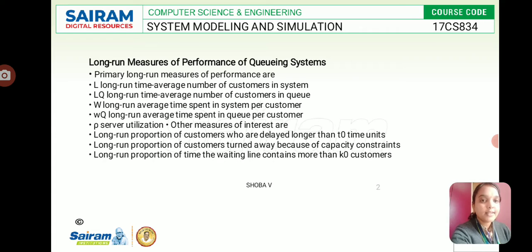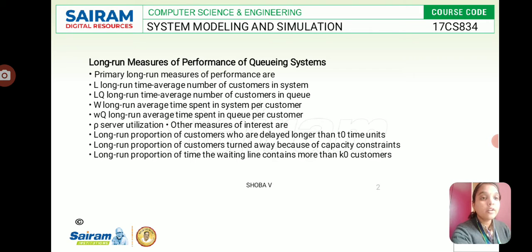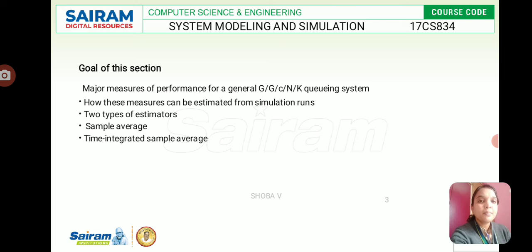Under server utilization, we look at the long-run proportion of customers who are delayed longer than T-naught time units, those turned away because of capacity constraints, and those waiting in line with more than K-naught customers due to limited system capacity. There is also a stable assumption of an infinite calling population, and the aim is to measure the queuing system performance.